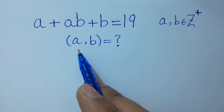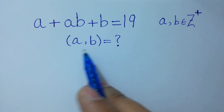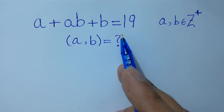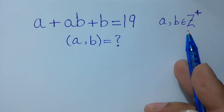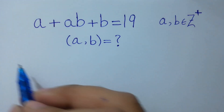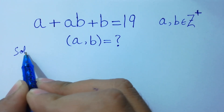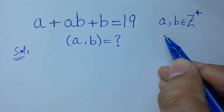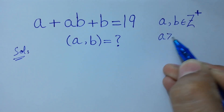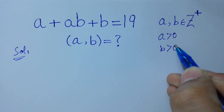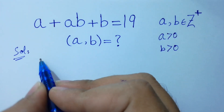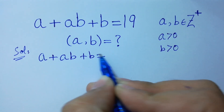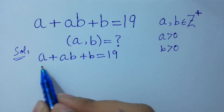Hello friends. Find the values of a and b if a plus ab plus b equals 19, where a and b belong to positive integers. Let's solve it. Since a and b belong to positive integers, a is greater than 0 and b is greater than 0. We have the equation a plus ab plus b equals 19.